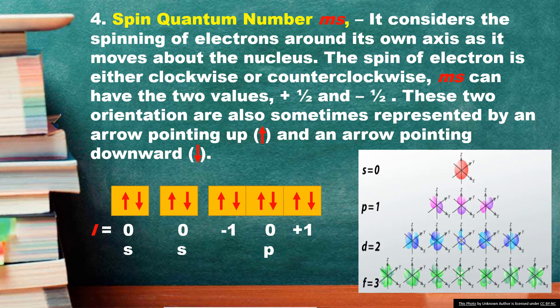If you are referring to N equal to 2, or the second energy level, there are two possible values for L. L can be 0 or L can be 1. If L is equal to 0, you are referring to the 2S orbital, and the ML value is 0. If L is equal to 1, you are referring to 2P orbitals, and the ML values are negative 1, 0, and positive 1.